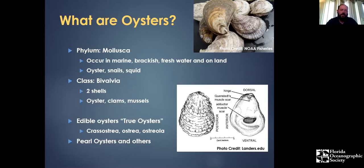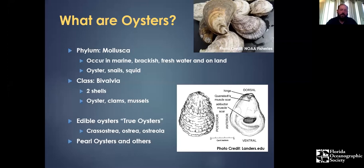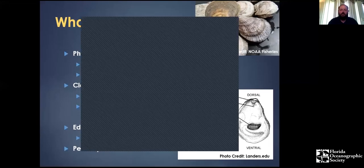Within Mollusca, oysters are part of the class Bivalvia — 'bi' meaning two, and 'valve' basically meaning shell. So they're two-shelled invertebrate animals with no vertebrae. Bivalves include oysters, clams, and mussels. Humans have been eating bivalves for a long time — they've been an important nutritional staple for centuries.